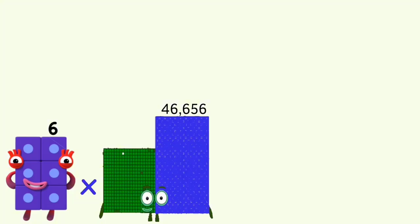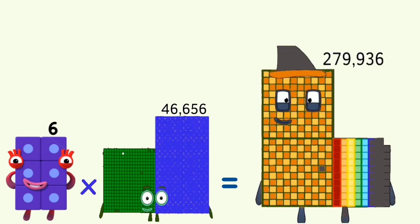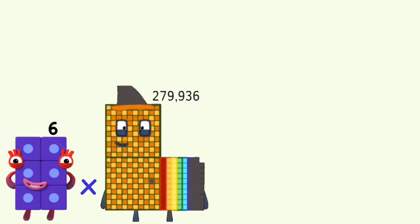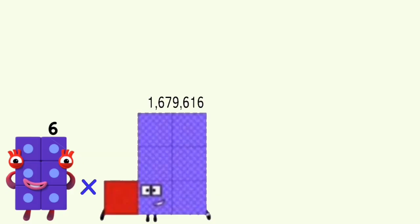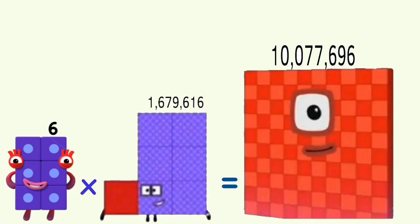6 times 46,656 equals 279,936. 6 times 279,936 equals 1,679,616. 6 times 1,679,616 equals 10,077,696.